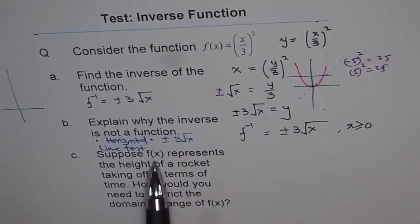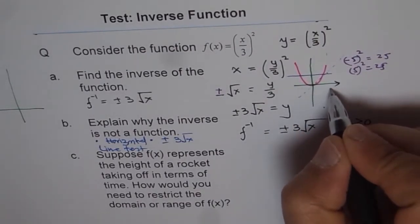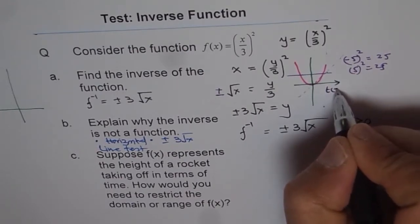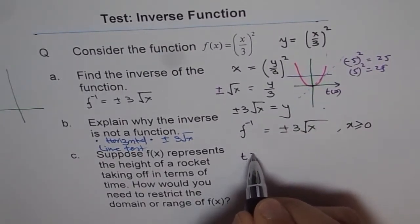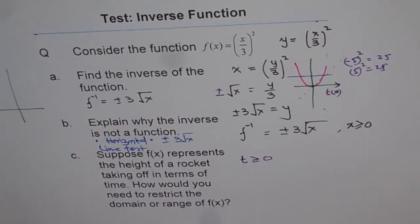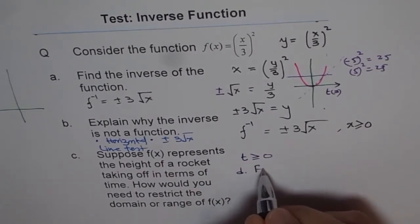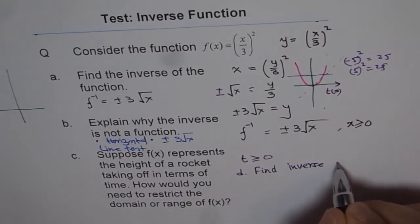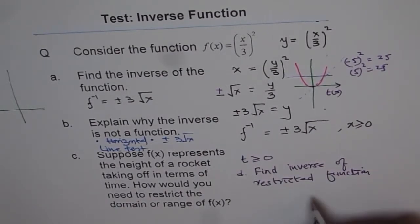Part c: suppose f(x) represents the height of a rocket taking off in terms of time. How would you need to restrict the domain or range? If it is taking off, x represents time in seconds along the x-axis. The restriction is that time t ≥ 0. So the restriction that applies here is t ≥ 0. As an exercise for you (part d), find the inverse of the restricted function and explain why that inverse is a function.